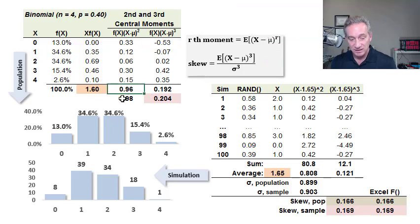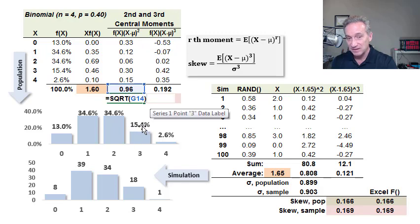And then finally, what I did in this column is I took the square root of that to get the standard deviation, which is our sigma, and rounded it as 0.98.